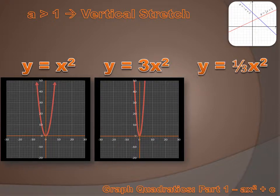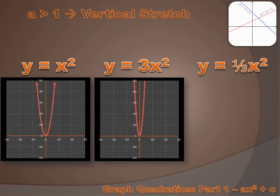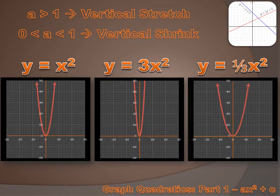What if our function were y equals one-third x squared? That's just the opposite. When x increases by one, the effect on y is reduced to one-third of that. So when I move one along the x-axis, I won't move as much along the y-axis. Consequently, my parabola is going to be wider — it's going to open up wider than the parent function. We call that a vertical shrink.